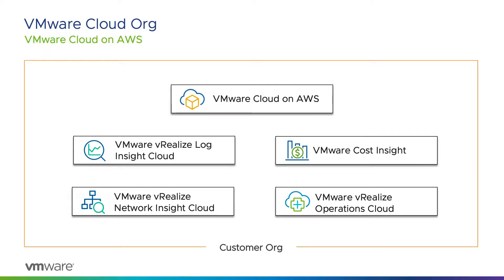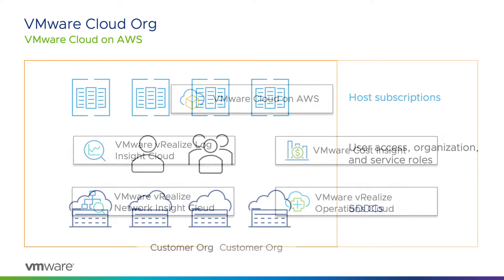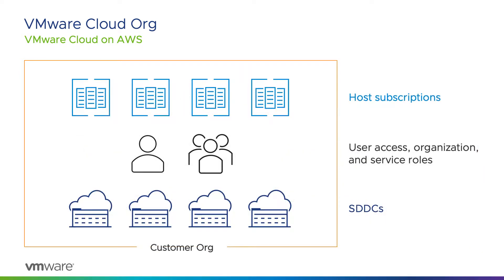The VMware Cloud organization is a top-level construct containing one or more cloud services. This organization could apply to the company overall, to a group, or a business unit within the company that's subscribing to the service. The customer's My VMware account is used to create the organization and gives the account holder the organization owner role. Owners can create host subscriptions at the org level, as well as invite other users and assign roles.